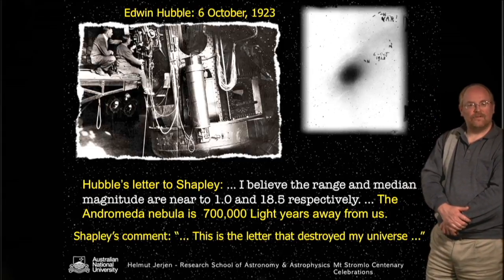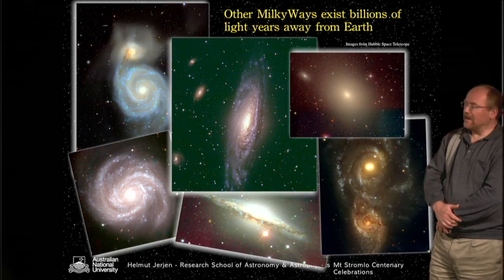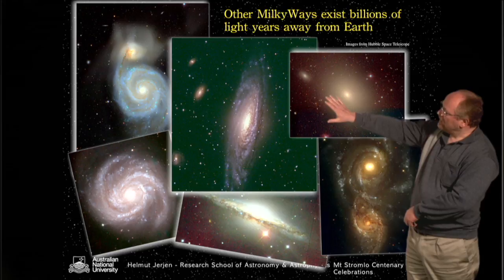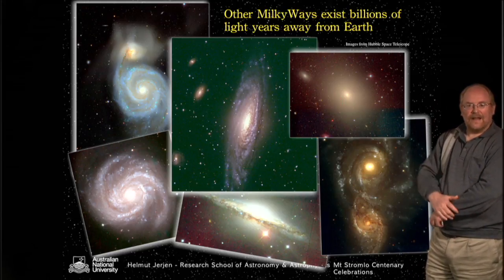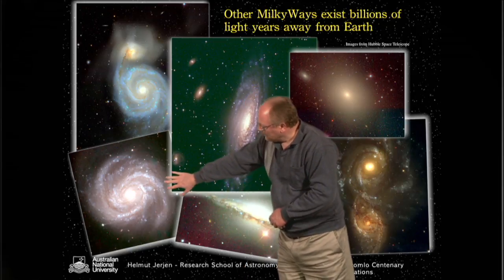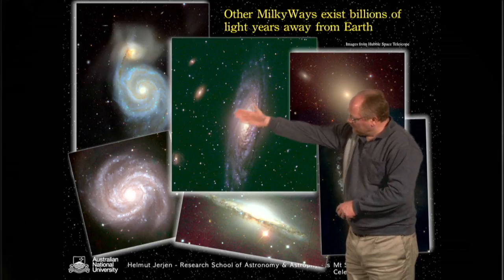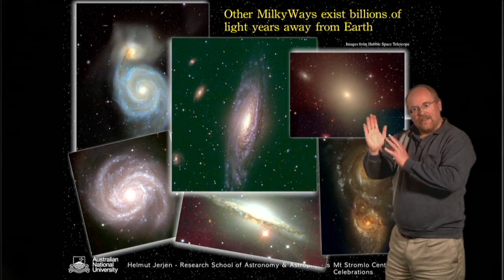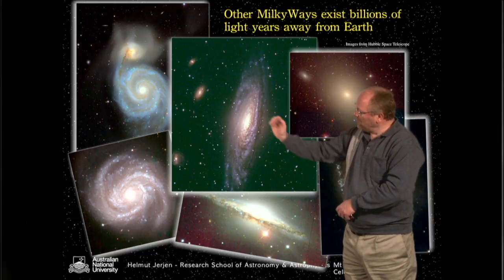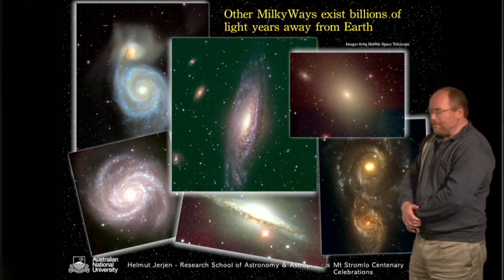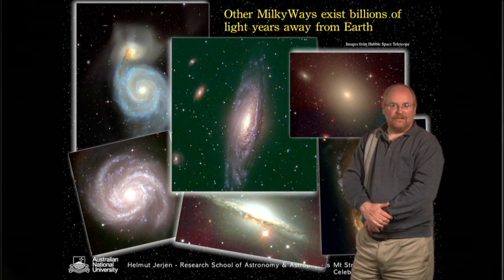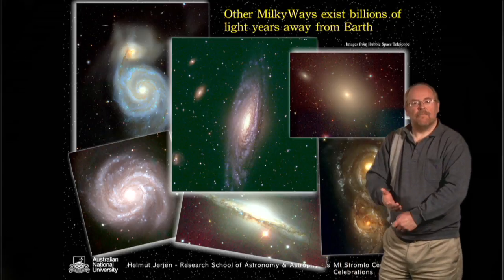Let's have a look at some of these beautiful galaxies or spiral nebulae as they appear in the sky when you use a telescope like the Hubble Space Telescope. It was realized that there are many, many other Milky Ways out there, billions of light years away from Earth. They have all this beautiful spiral pattern, like M51. Sometimes you see them face-on, sometimes almost edge-on. Sometimes they are interacting. So there are millions of galaxies out there, similar to our own Milky Way, and each of them has many, many billions of stars.